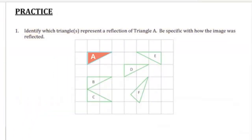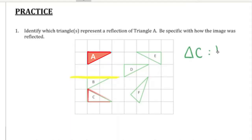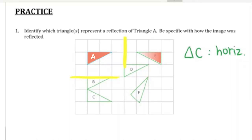So there are two triangles that are a reflection of triangle A. One of them is triangle C, and it is reflected horizontally through a line that is halfway between triangle A and triangle C — a horizontal reflection. The other triangle is triangle E, and it is reflected through a vertical line that goes halfway between triangle A and triangle E.